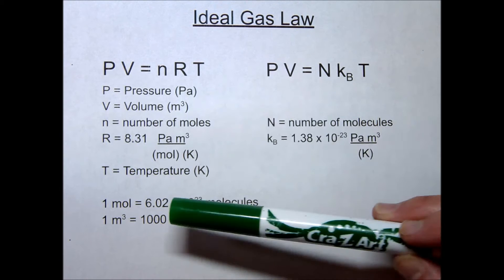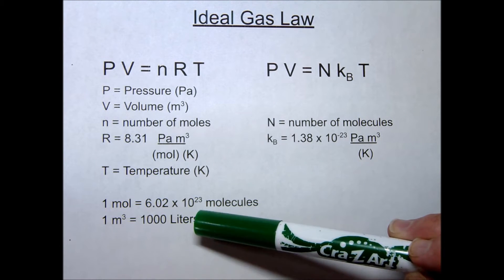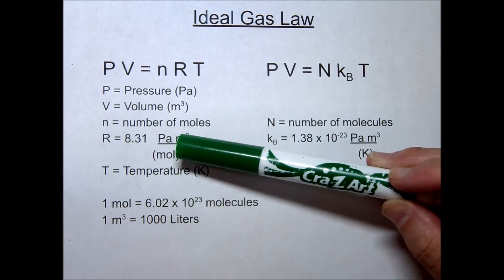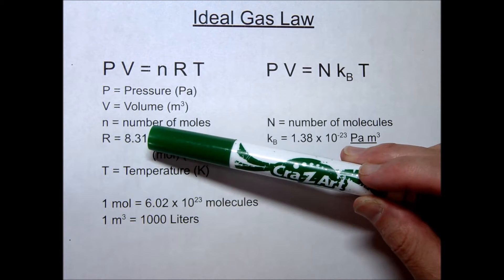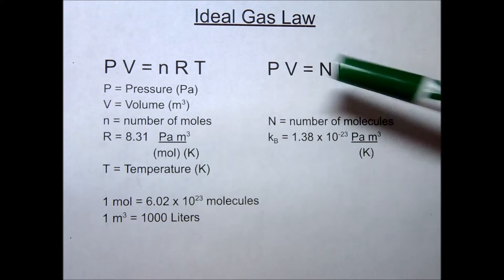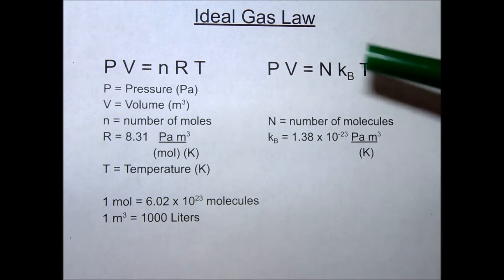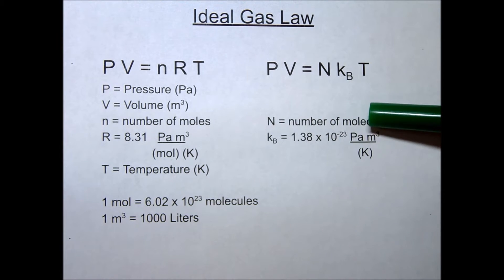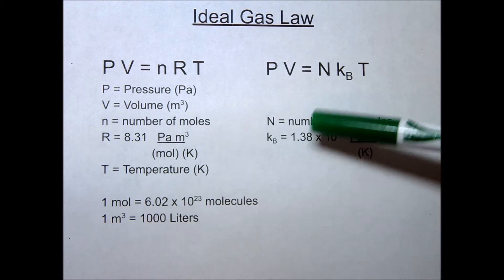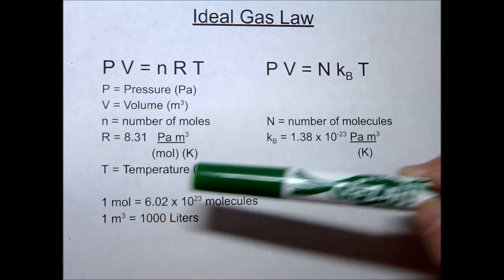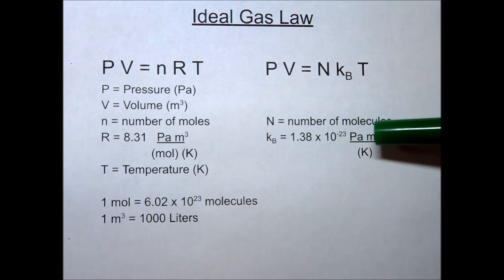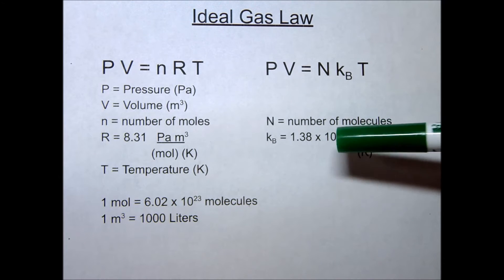Volume should be in meters cubed. A lot of times they give you liters, so remember one meter cubed equals 1,000 liters. The ideal gas constant is 8.31. Temperature needs to be in kelvins. You may also see the equation written with a capital N for number of molecules, whereas lowercase n is the number of moles. One mole equals 6.02 times 10 to the 23rd. Boltzmann's constant is 1.38 times 10 to the negative 23.